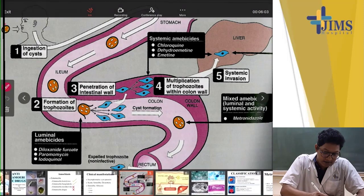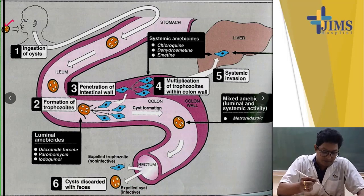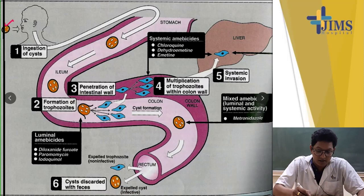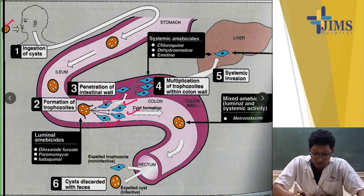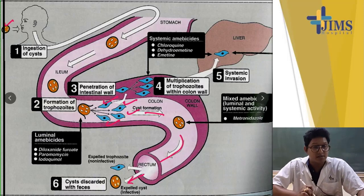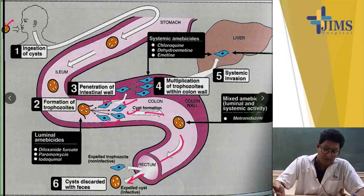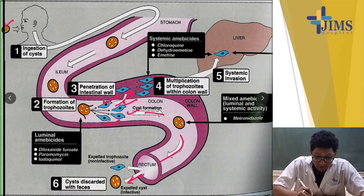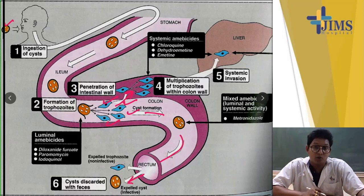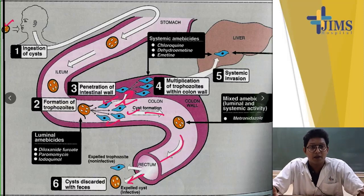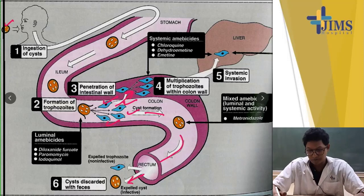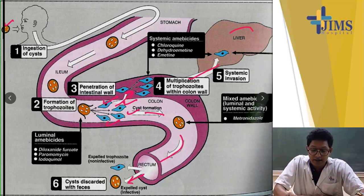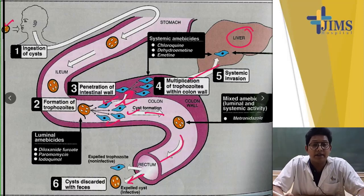Cysts are the infective form of this parasite. On ingestion, the cyst passes through the stomach and reaches the intestine, where trophozoites are released. These trophozoites may again form cysts and pass through the feces without affecting the patient — asymptomatic cyst passage. Or, these trophozoites may invade the colonic mucosa and cause ulcers, giving symptoms like loose stools with blood and mucus. The trophozoites may also reach the liver and give rise to amoebic liver abscess.